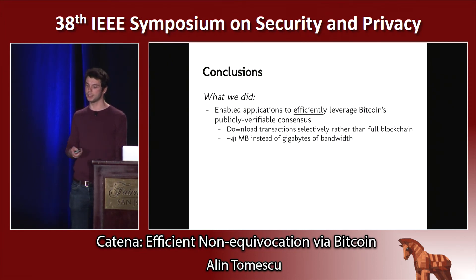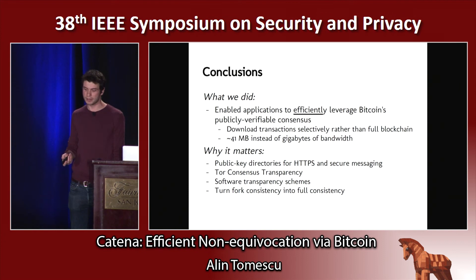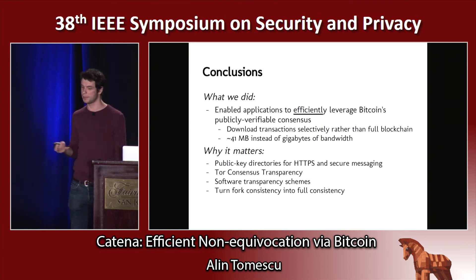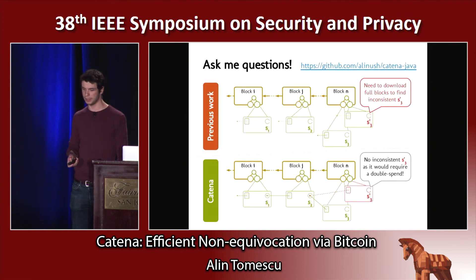To conclude, what we did here is enable applications to efficiently leverage Bitcoin's publicly verifiable consensus. Clients only need to download transactions selectively rather than the full blockchain — 41 megabytes for a small log rather than gigabytes. We can hopefully build better public key directories, secure certificate transparency against equivocation, build Tor consistency, and build software transparency schemes very easily with a Catena log. In general, we can take any fork-consistent system and give it full consistency — things like Sunder, Spork, Frintegrity, and so on. Our code is open source.